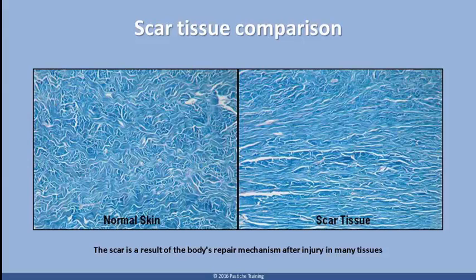The collagen is denser and less elastic than normal tissue, and proliferation of this highly cross-linked collagen-abundant scar tissue often results in diminished physiological function. For example, scars in the skin are less resistant to ultraviolet radiation. Also, sweat glands and hair follicles do not grow back normally within scar tissues.